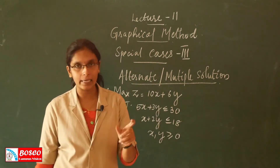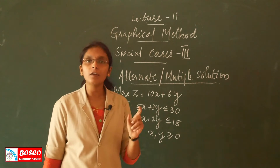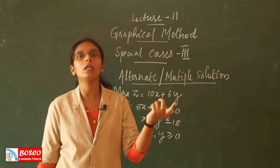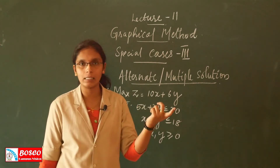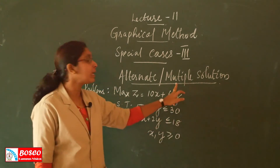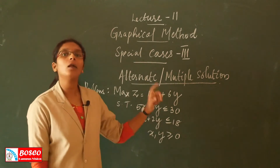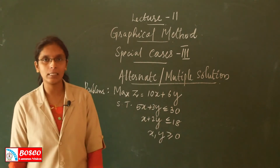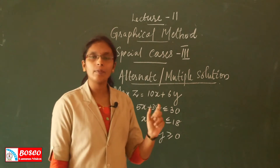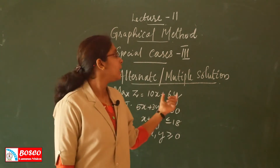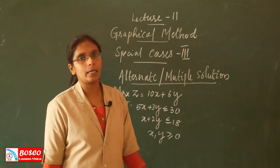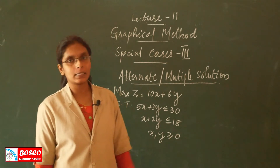In that case, in the objective function, multiple activities exist. That is, multiple solutions exist — the alternative solution exists. This is the case where the objective function yields the same optimal value at more than one point.